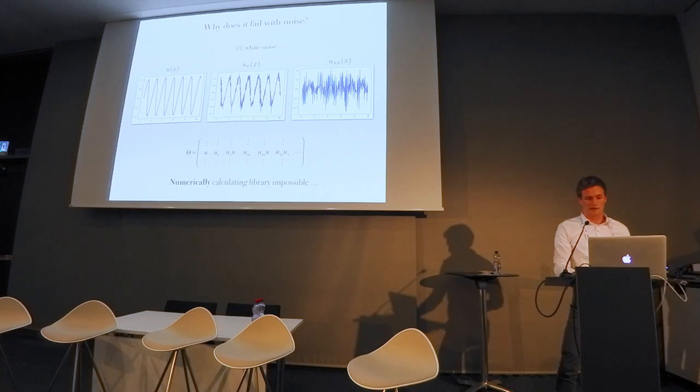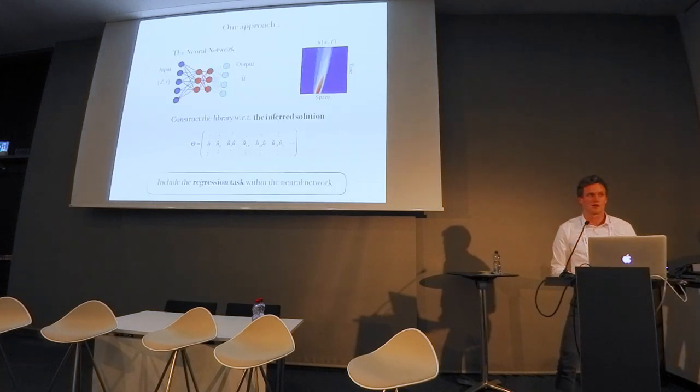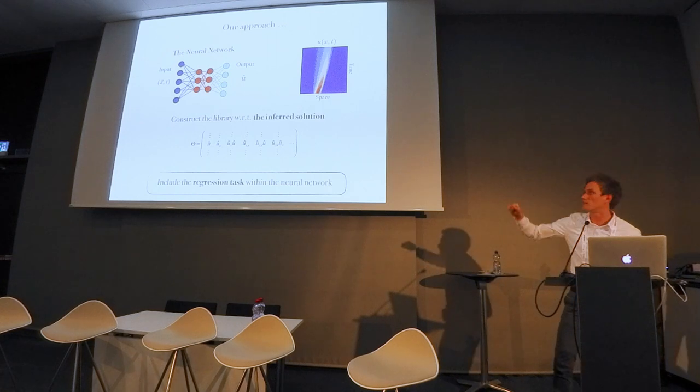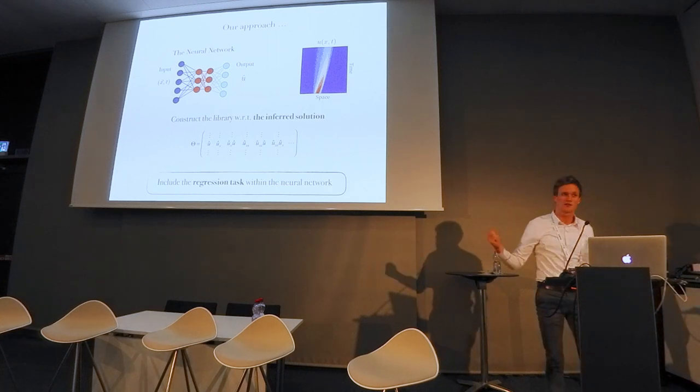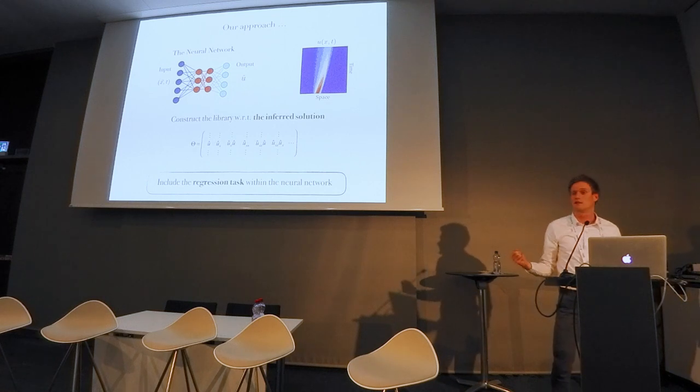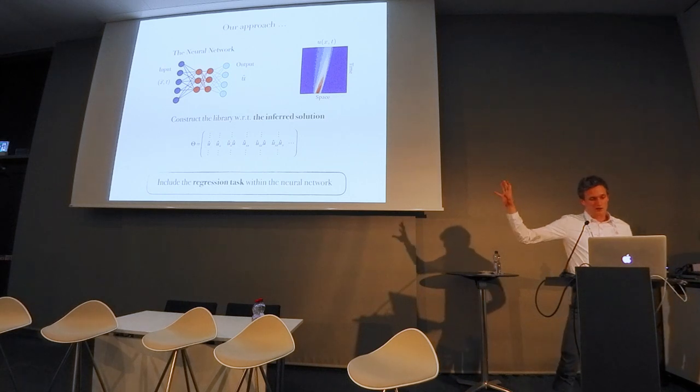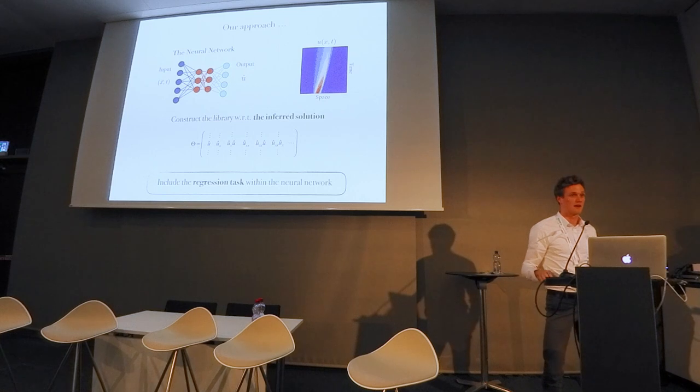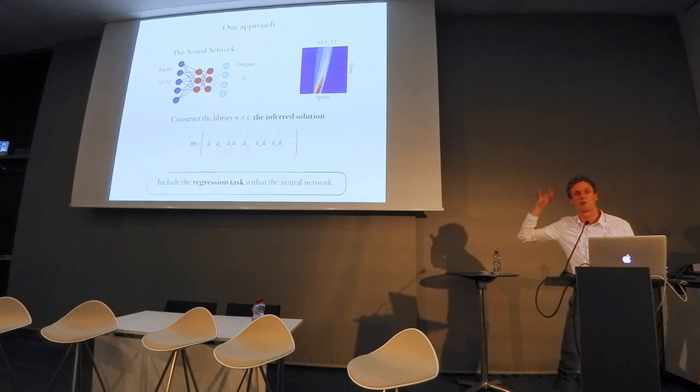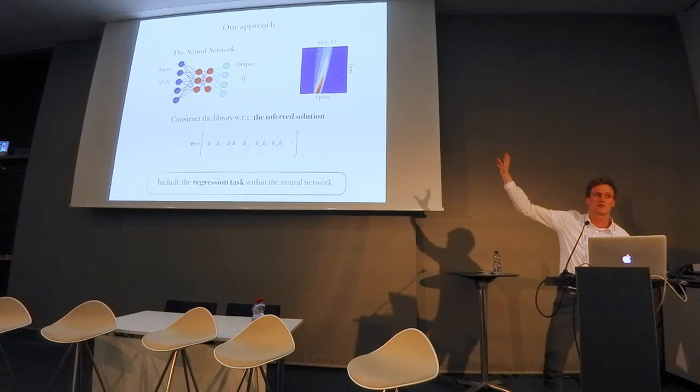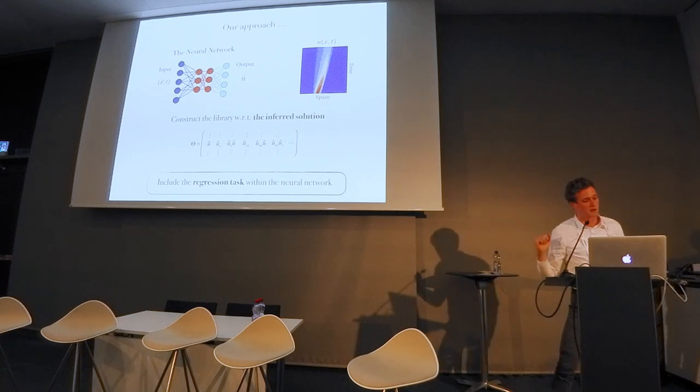The solution we present is to use a neural network to learn the mapping x,t to u, and to construct this library with respect to the inferred solution and not with respect to the actual data. We include the regression task within the neural network, and I'll show at the end why this is really important, and not to just use the neural network to learn the mapping and then do the regression.